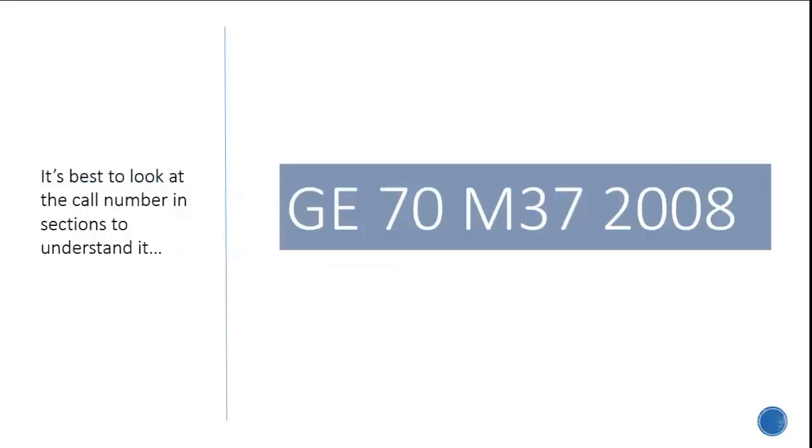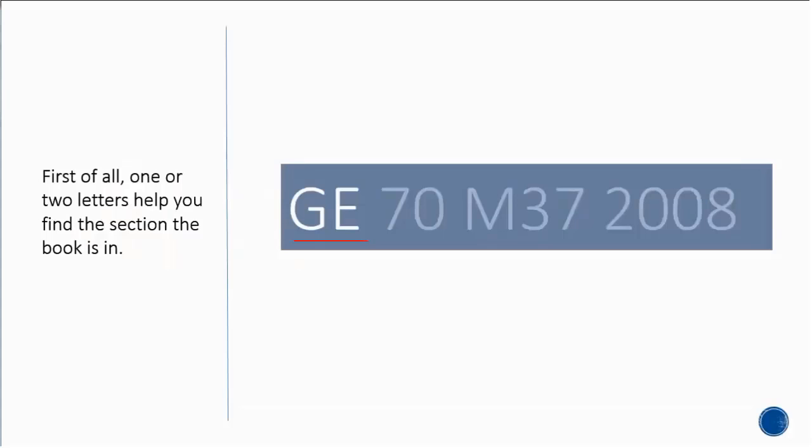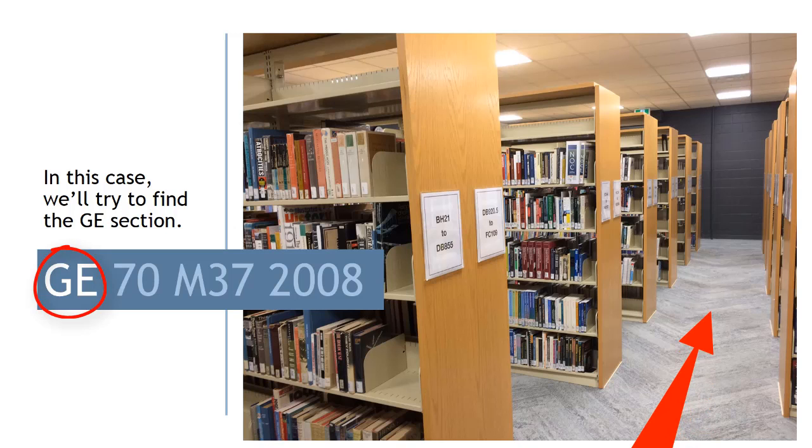It's best to look at the call number in sections to understand it. First of all, one or two letters help you find the section the book is in. In this case, we'll try to find the GE section by looking at the call number ranges on the ends of the shelves.